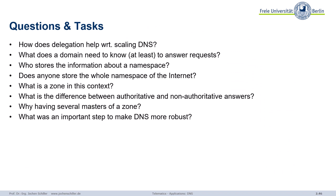So coming to some questions. How does delegation help with scaling? Why does it scale? What do we need at least to know to answer certain requests — what does a domain have to store? Who stores this information about the namespace — the whole namespace or parts of it? Does anyone store the whole namespace of the internet? Is this necessary? And in this context, what is a zone? If you send a DNS request, sometimes you get back an authoritative answer but most of the time a non-authoritative answer — what does that mean? Are they wrong because they are non-authoritative? Why do we have several masters in a zone? And how did we really make DNS more robust compared to the early days?